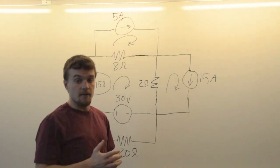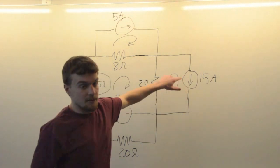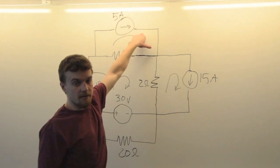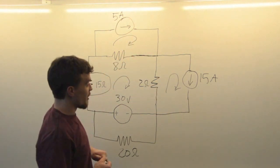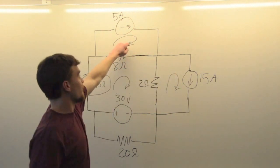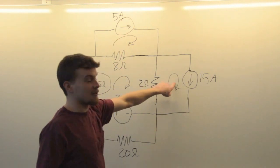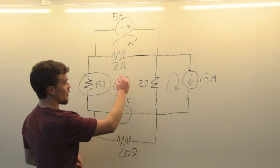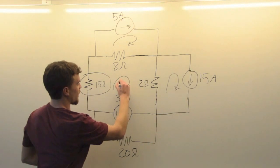Now since these current sources are by themselves on the outside of loops, we know the values of these two loop currents. This one's going to be 5 amps, this one's going to be 15 amps. Now that only leaves us one unknown. We'll call it I1.